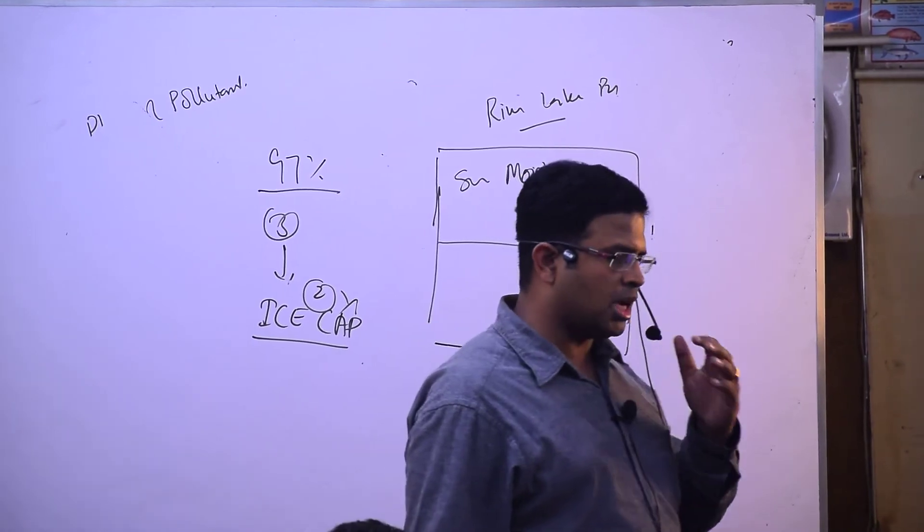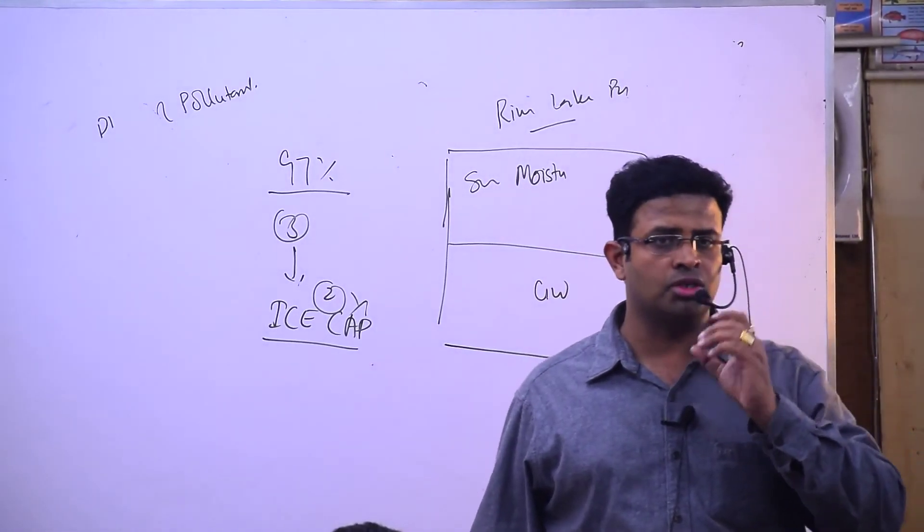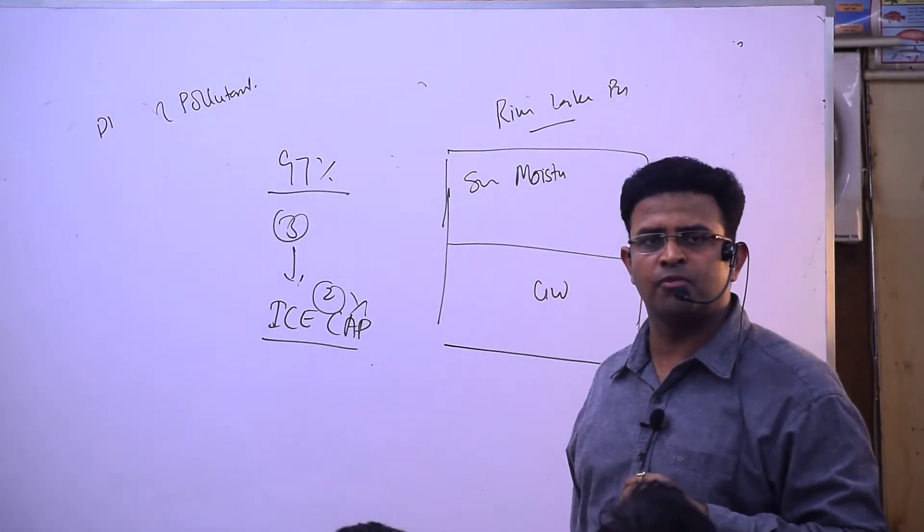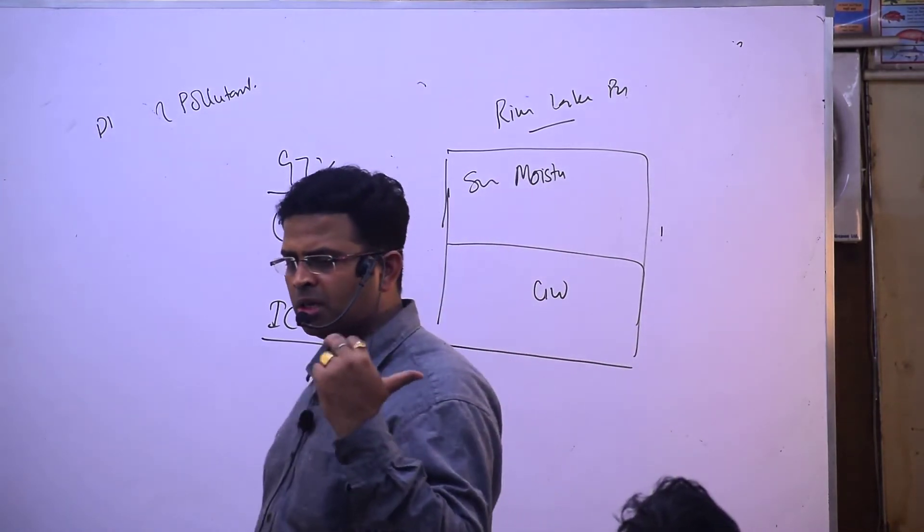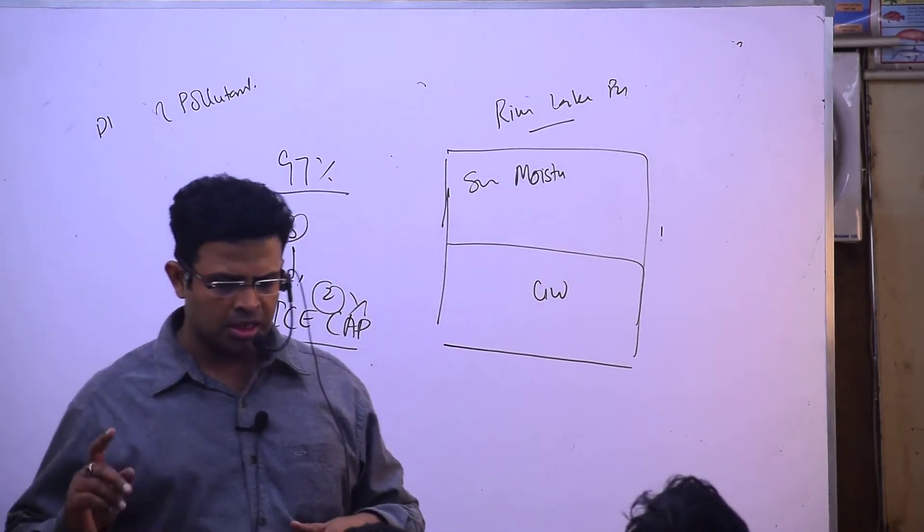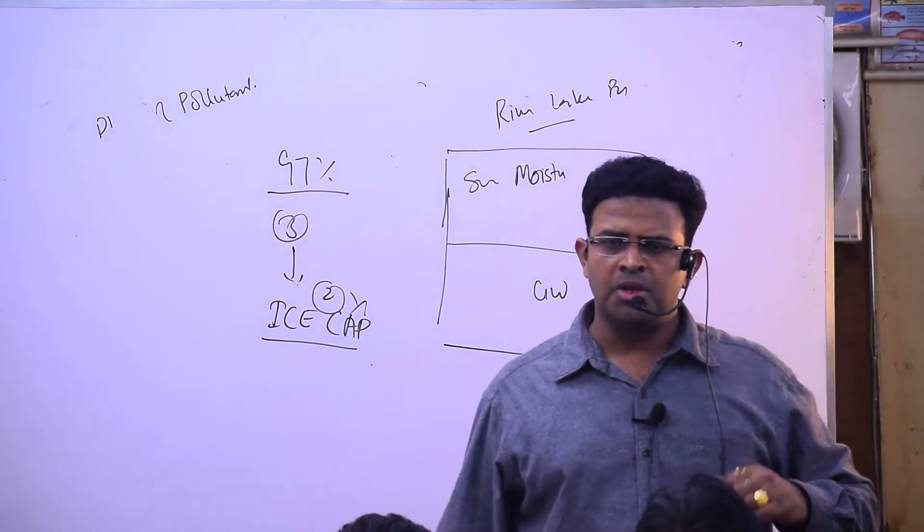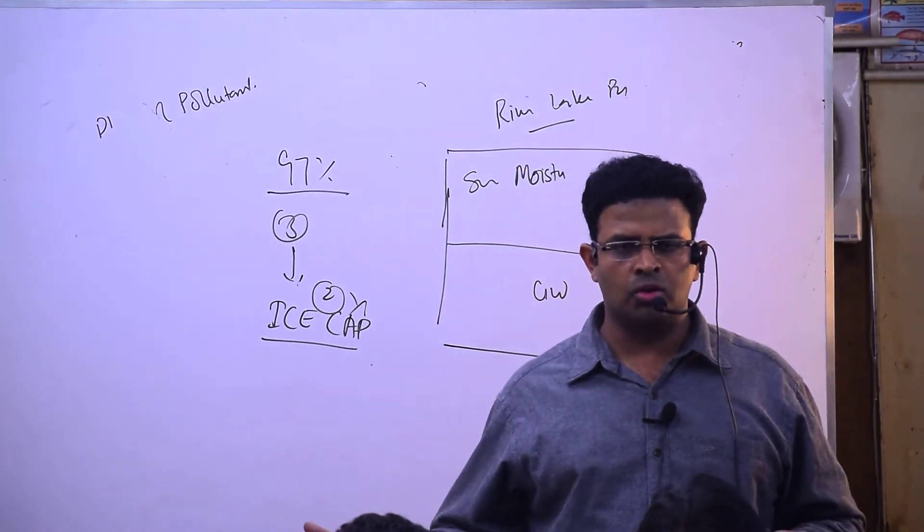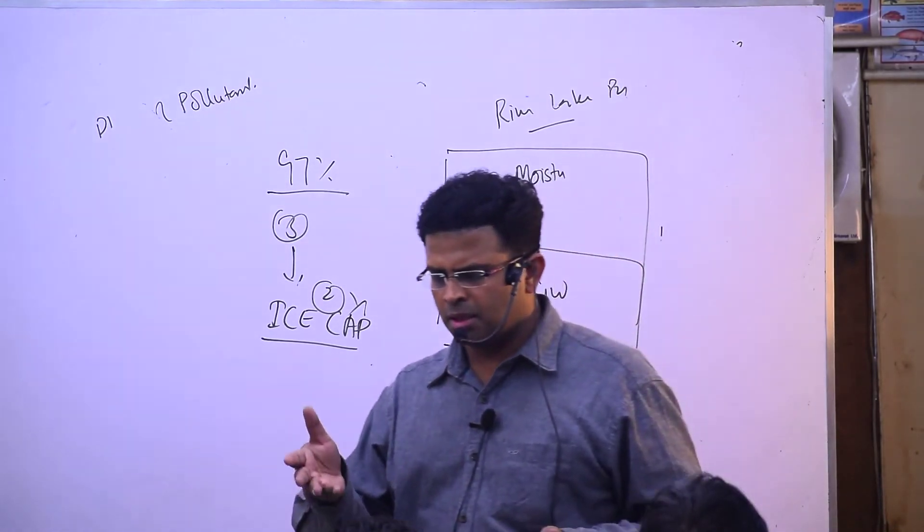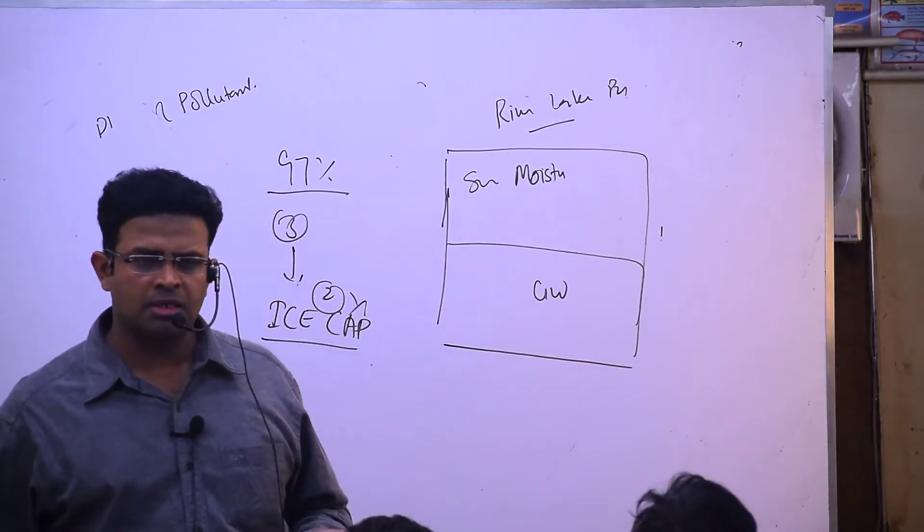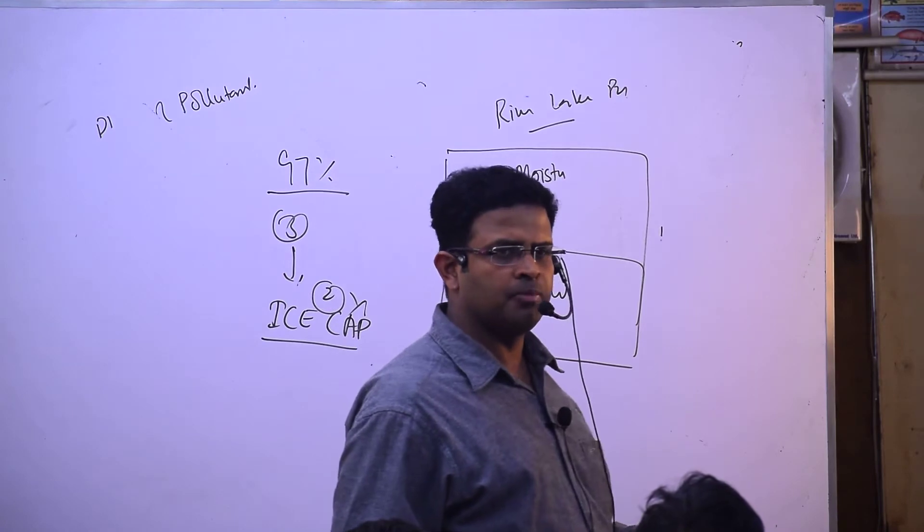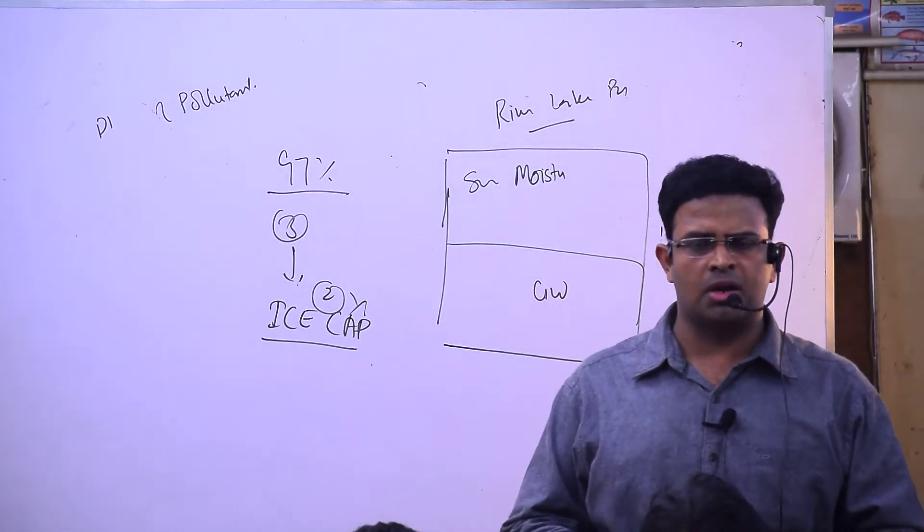Biotic community includes plants - 3 lakh species, and animals - 13 lakh species. Classification of ecosystem includes natural and artificial. Natural has terrestrial (forest, grassland, desert) and aquatic ecosystems.